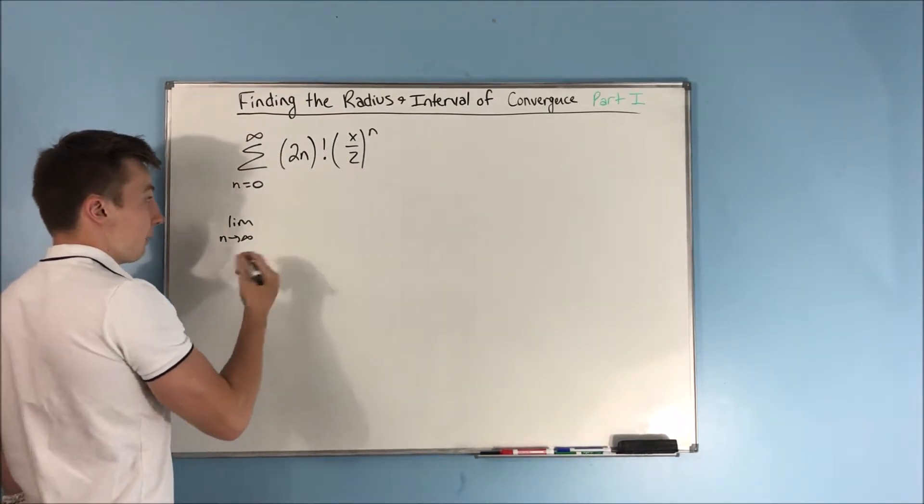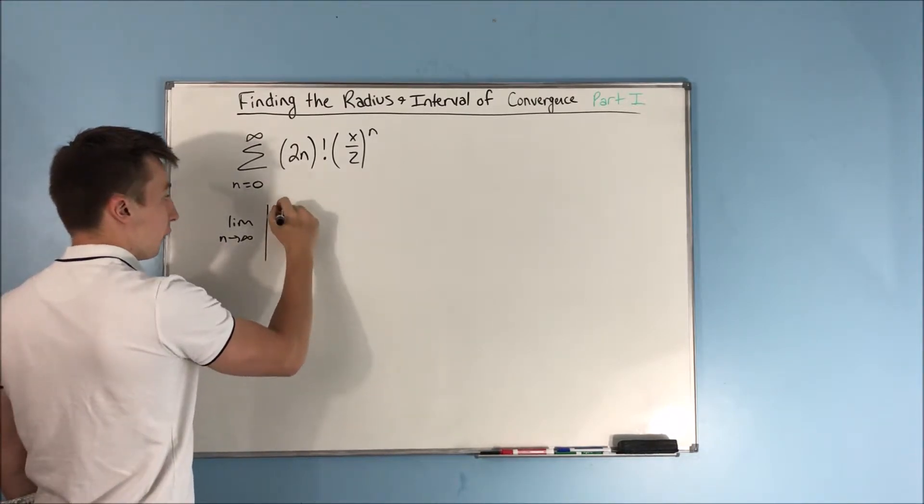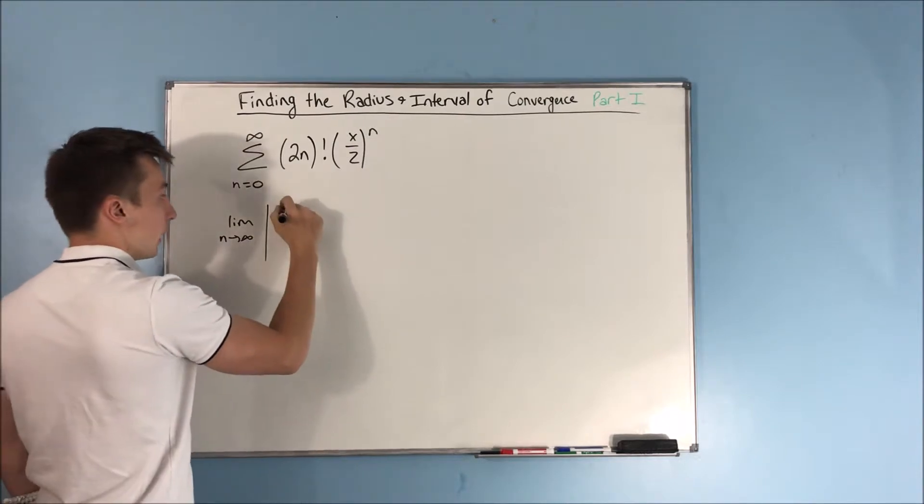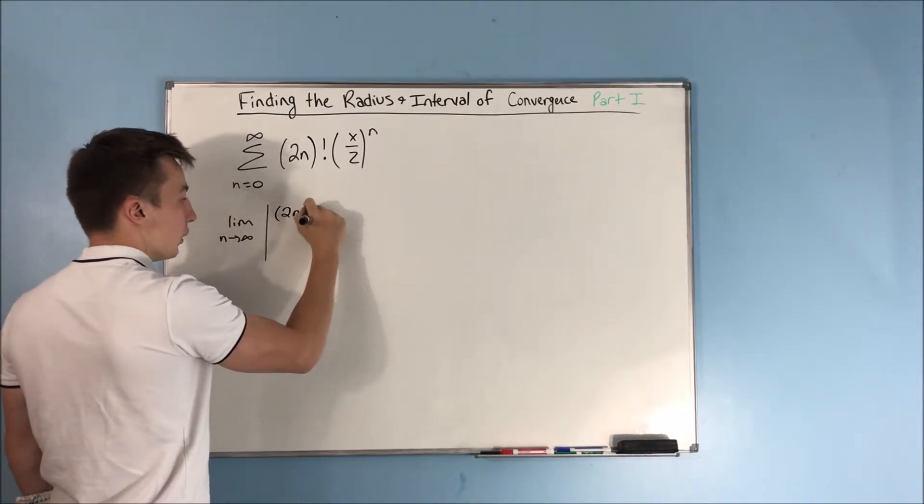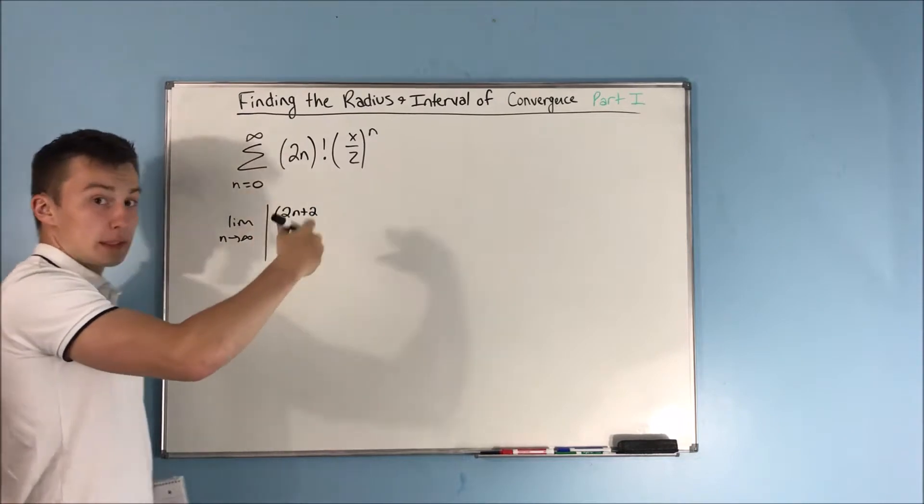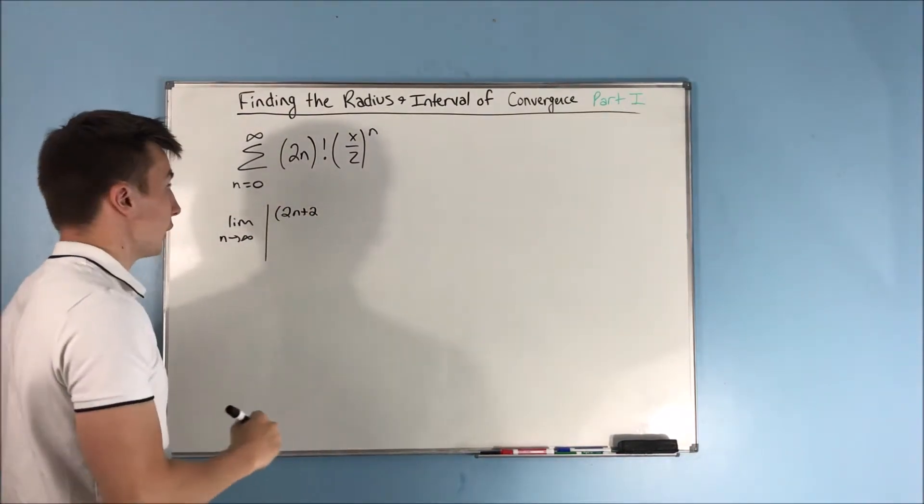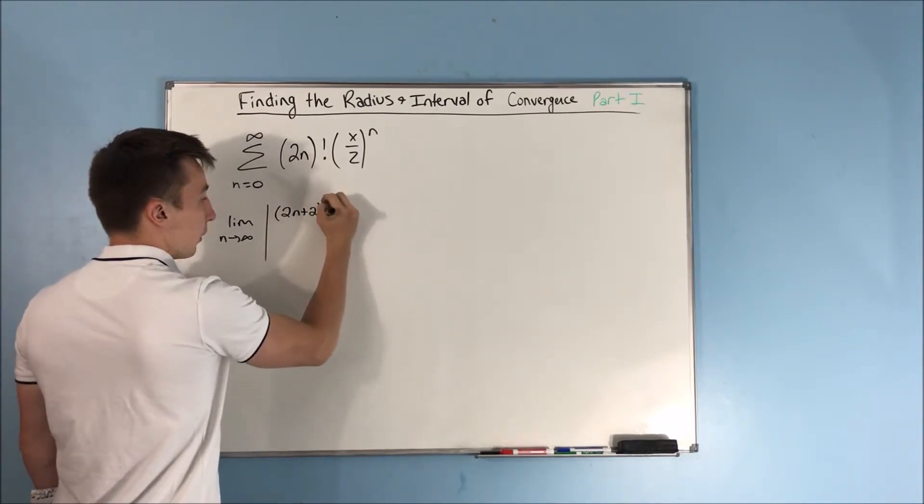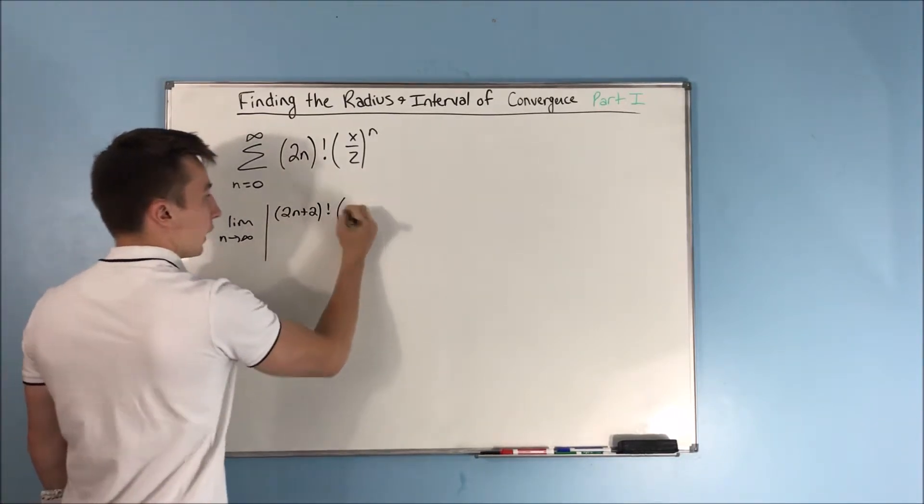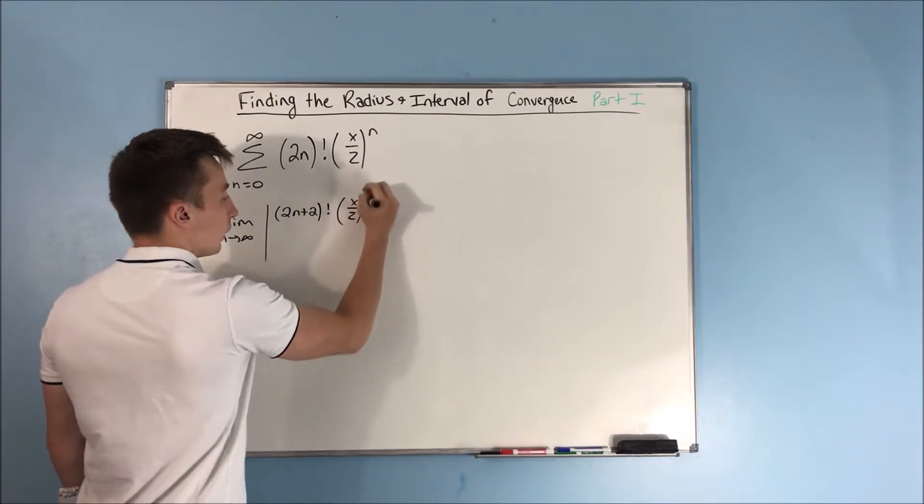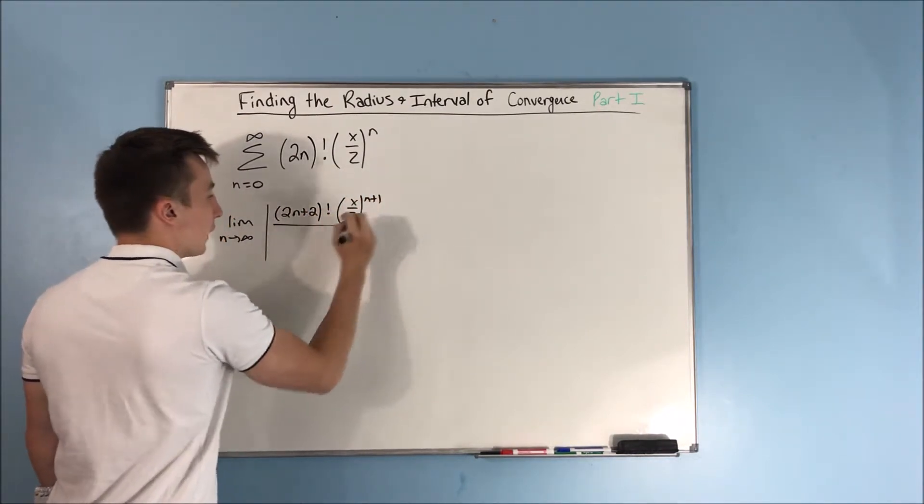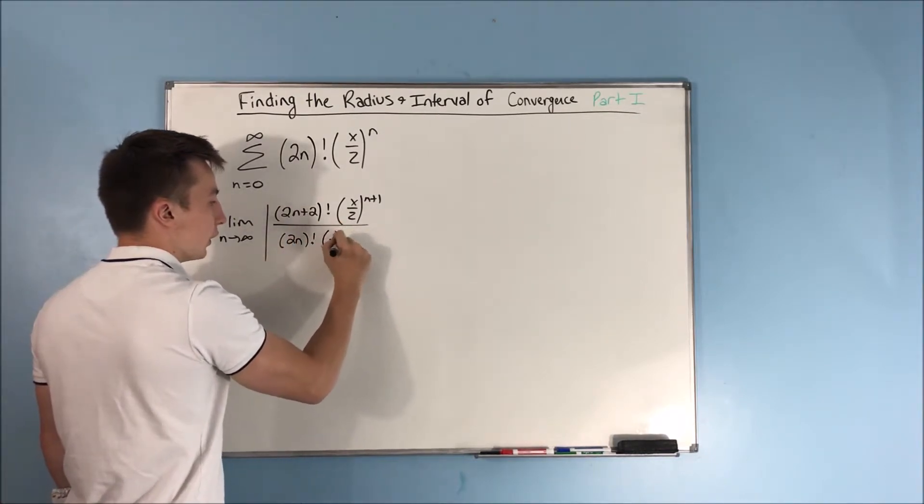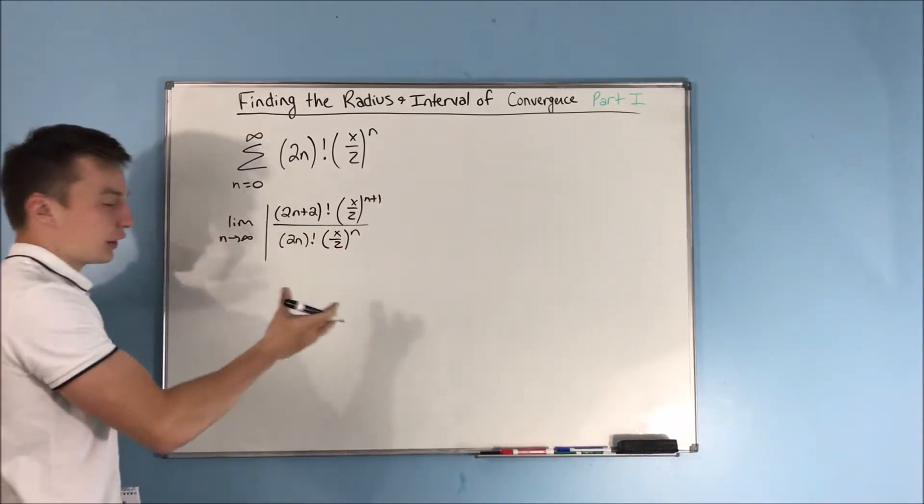Limit as n approaches infinity of the absolute value of, well, we just plug in n plus 1 for n, and we get this is going to be a 2n plus 2, because it's 2 times n plus 1, you got to distribute that 2 out. And that's going to be in parentheses factorial times x over 2 to the n plus 1, and that's going to be over 2n factorial times x over 2 to the nth power, just your a sub n.